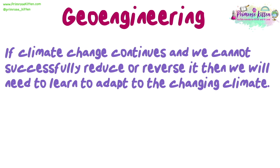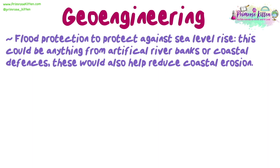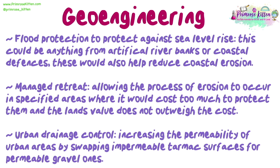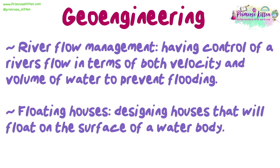If climate change continues and we cannot successfully reduce or reverse it, we will need to adapt. Examples include: flood protection against sea level rise, such as artificial riverbanks or coastal defences, which also reduce coastal erosion; managed retreat, allowing erosion in specified areas where protection costs outweigh land value; urban drainage control, increasing permeability by swapping impermeable tarmac for permeable gravel surfaces; river flow management to control velocity and volume of water to prevent flooding; and floating houses designed to float on the surface of a water body.